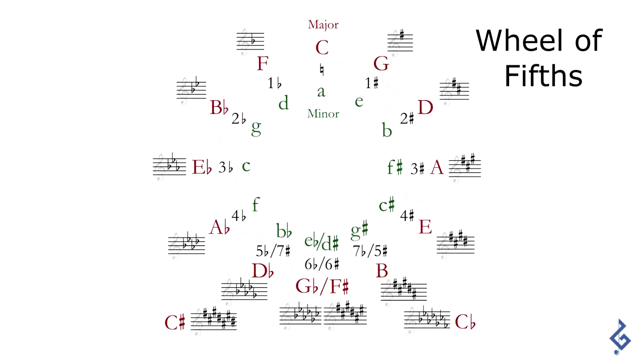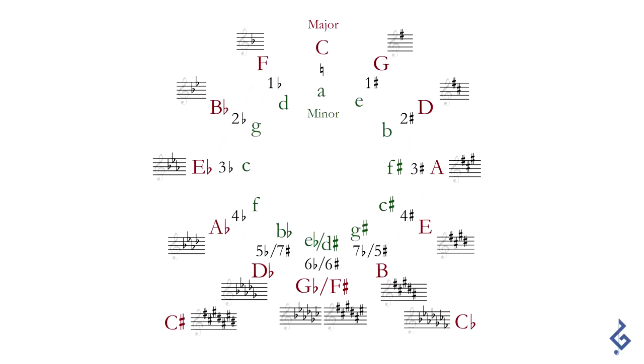It all began with one of the music theory basics, which is the Wheel of Fifths. It was invented by Nikolai Dilecki in the 1670s as a way of understanding the relationships between different chords — minor and major chords, which are the basic building blocks of music.